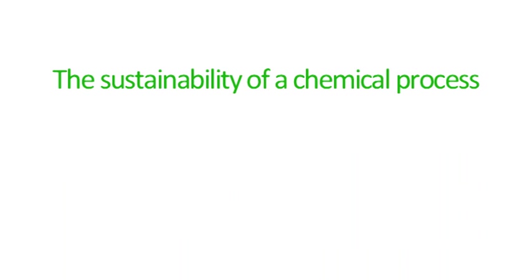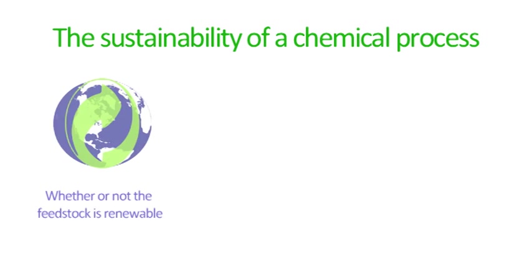The sustainability of a product links into seven key areas which build on the earlier stages of production. It is firstly important whether the raw materials or feedstocks that are needed are renewable, as this will determine their availability in the future.